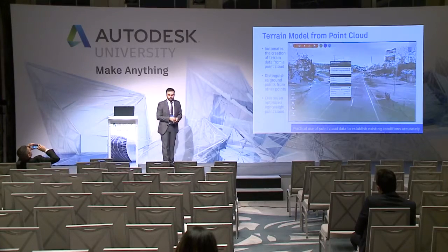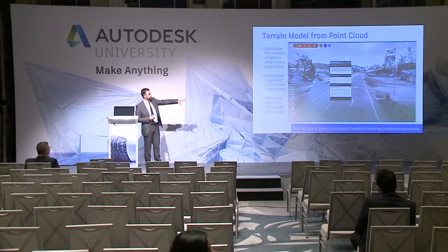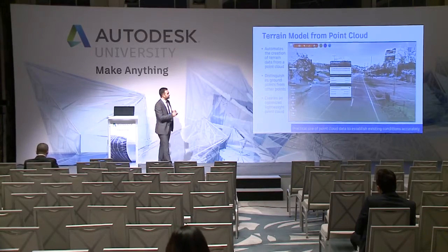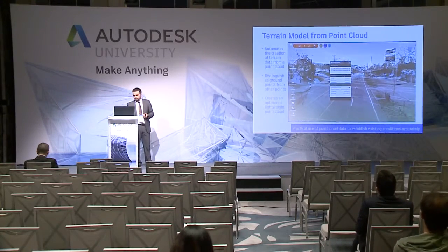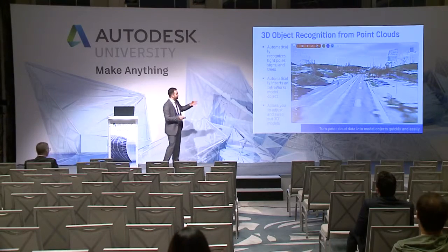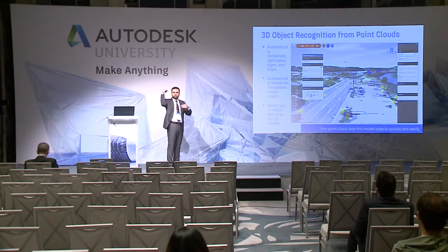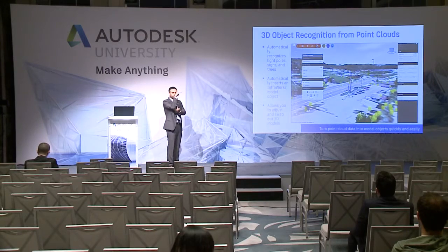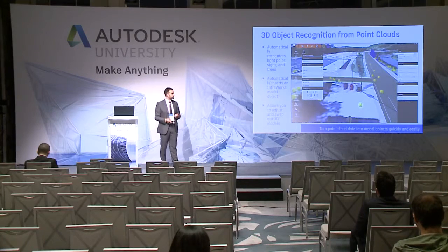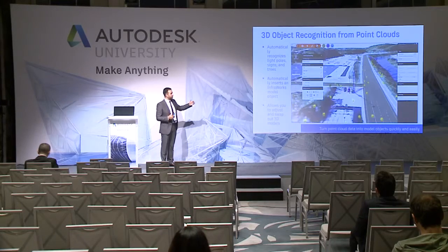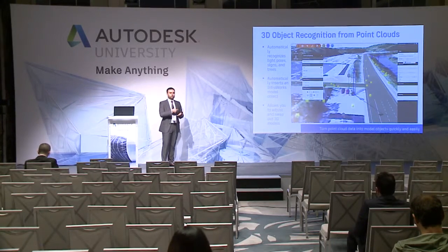You can also augment your model with point cloud data. What you see here is importing a point cloud into InfraWorks — the software analyzes the point cloud data to determine where the existing terrain is, and from that creates the existing terrain for the whole model to start the design process. The technology is going further: if you bring in a point cloud with trees, light posts, and other objects, the software will automatically detect what each feature is and recommend a corresponding 3D object from the library to replace that point cloud feature — working with both vertical and horizontal objects.